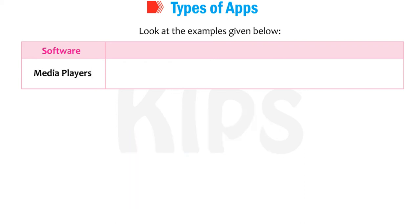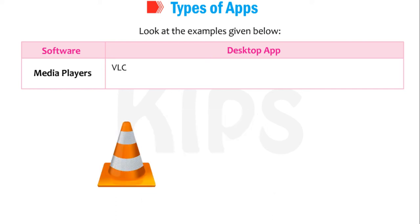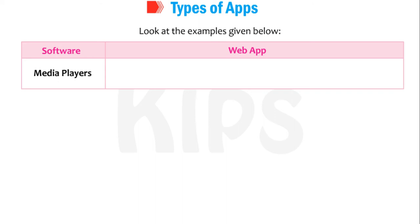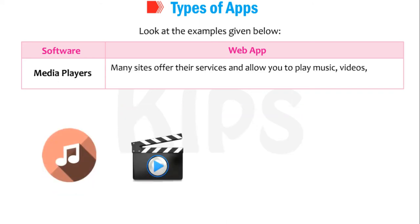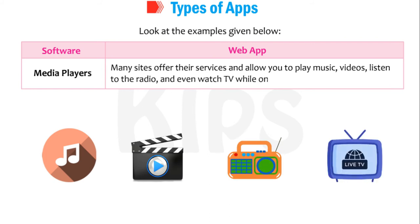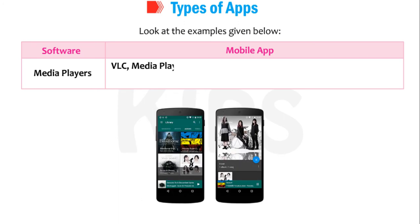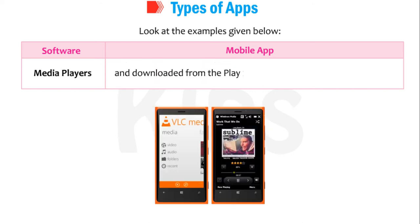For Media Players: desktop media player apps enable users to play music or videos on their computers. VLC player and Windows Media Player are some examples of freely available media players. As web apps, many sites offer services that allow you to play music, videos, listen to the radio, and even watch TV while online. VLC Media Player and MX Player are examples of apps that can be easily run on mobile phones and downloaded from the Play Store or App Store.